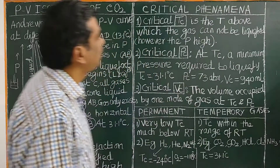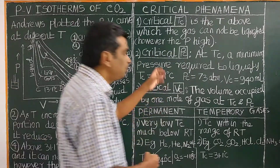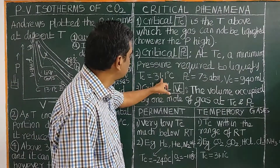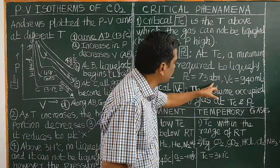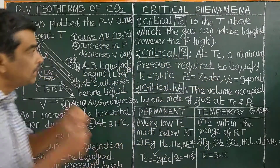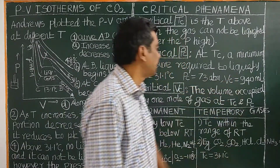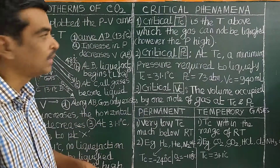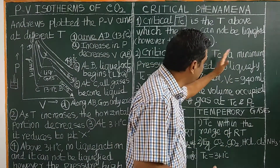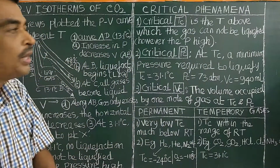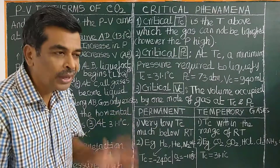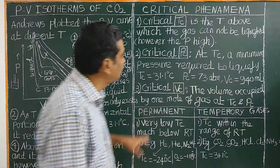Critical pressure is defined as the minimum pressure required to liquefy a gas at its critical temperature. For carbon dioxide, the minimum pressure required to liquefy it at the critical temperature is 73 atmospheres. Critical volume is defined as the volume occupied by one mole of gas at its critical temperature and critical pressure.